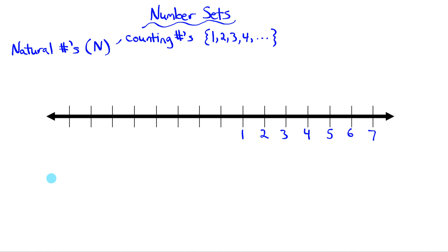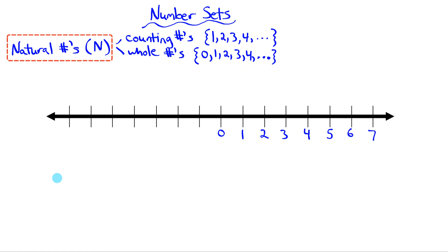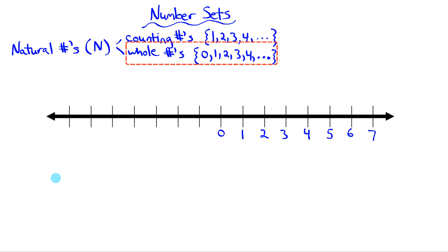But natural numbers don't necessarily only include the counting numbers — sometimes they also include zero. If we include zero as part of natural numbers, those are often referred to not as counting numbers, because you can't count to zero, but as whole numbers. So when we're talking about natural numbers, we're talking about all of the positive whole numbers, and possibly zero. If you use the terminology whole number, it's assumed that zero is included.